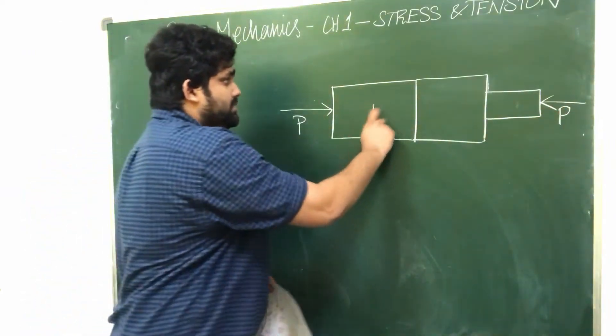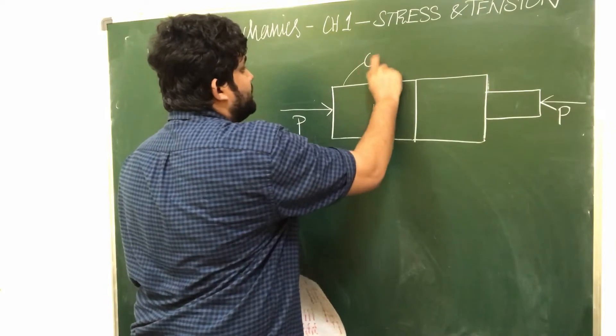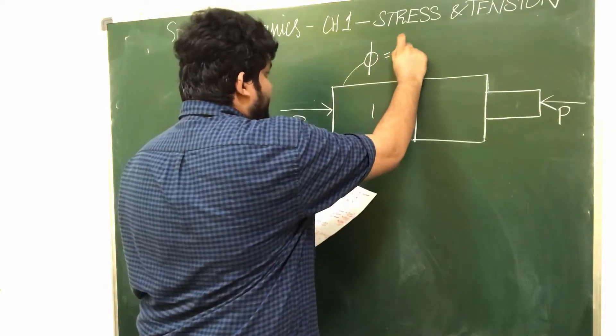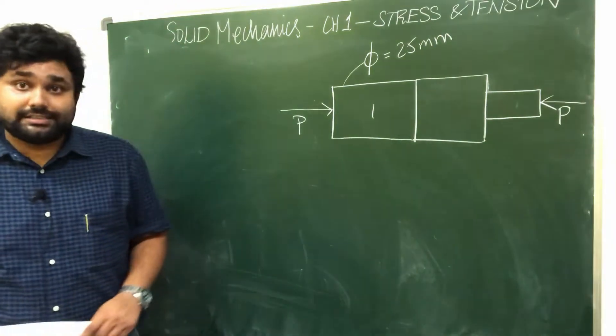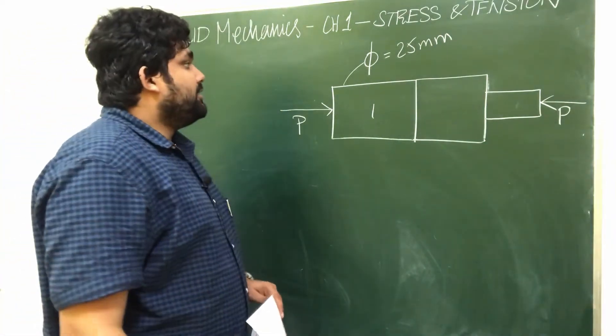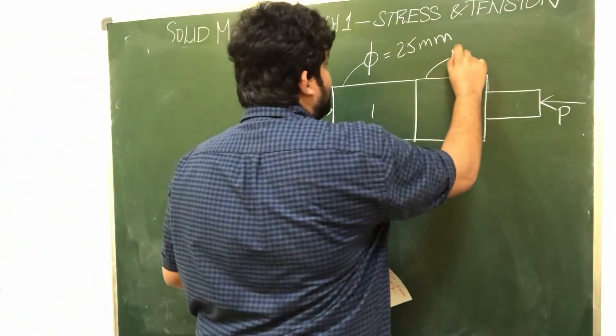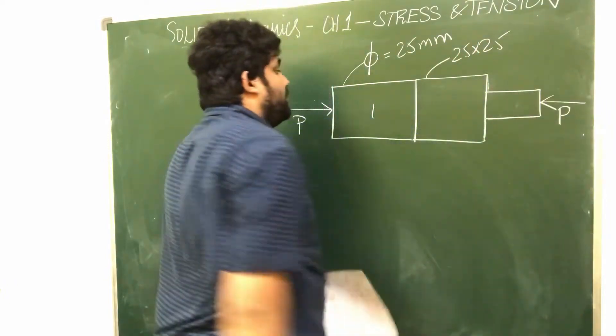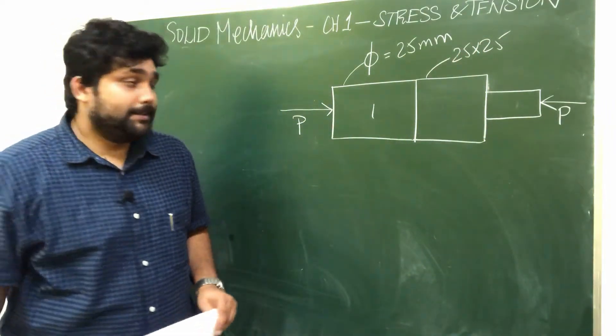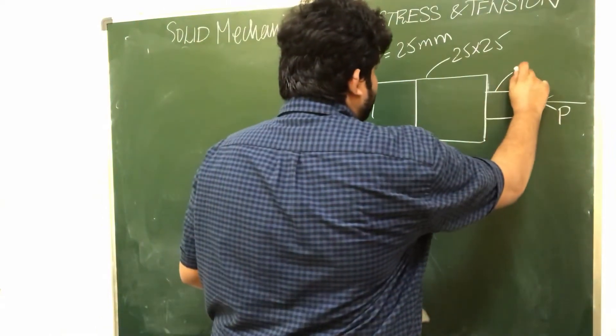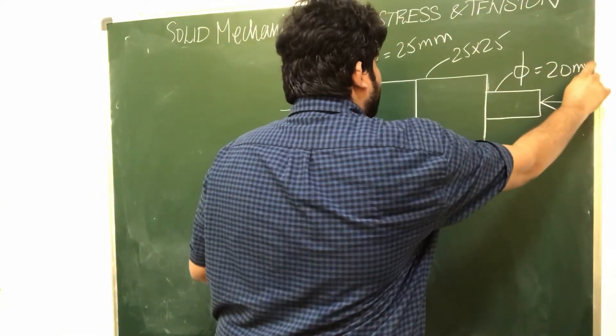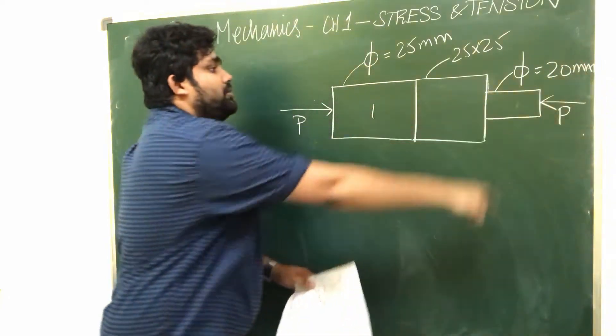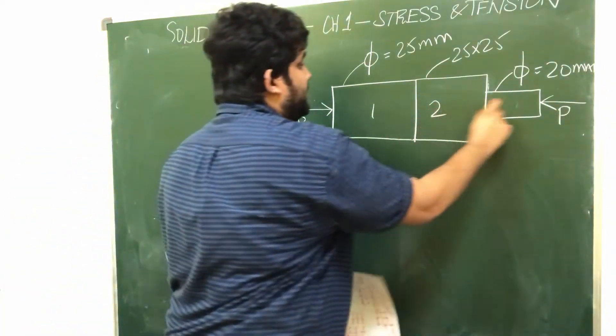First bar diameter is 25 mm, so area of cross section of first bar is cross sectional area of a circle. Second bar dimension is 25 x 25, so obviously cross section is square. Third bar dimension is 20 mm, so cross sectional area is a circle.